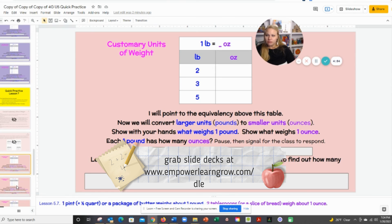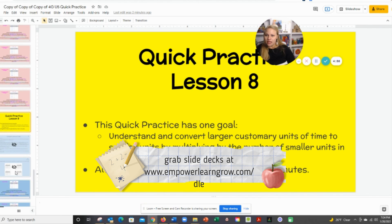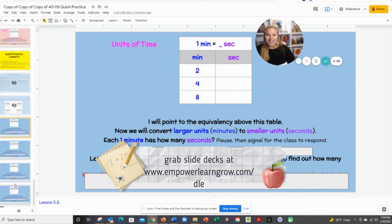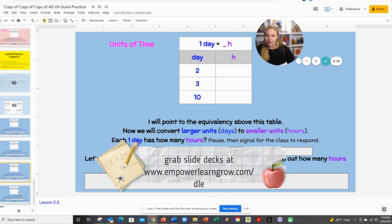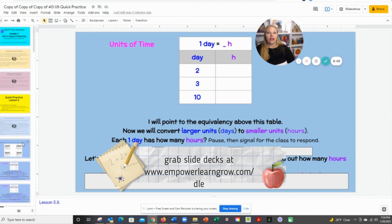You'll go through and do all of these. You get to lesson seven, we do it with customary weight. Then we get to units of time. We're going to convert our time and then you're finished with the unit. The entire quick practice is building automaticity with measurement conversion. Enjoy.